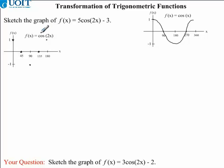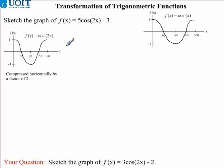Since this graph also contains a cos function, it's going to have a similar curve to our previous graph. We need to connect these dots such that it will have the exact same curve as the previous graph, except now compressed horizontally by a factor of 2. This is how our first graph should look — compressed horizontally by a factor of 2.